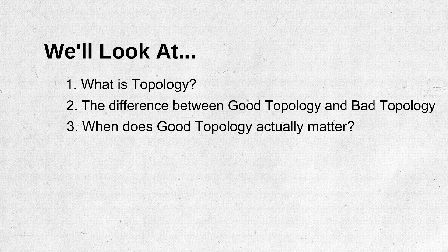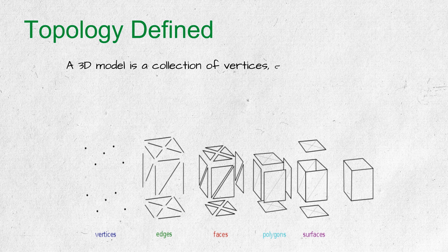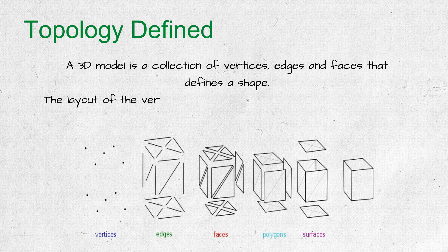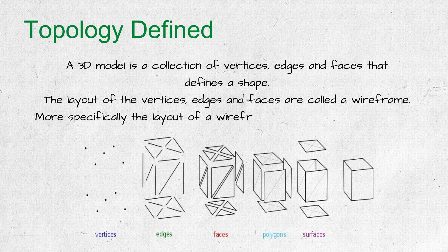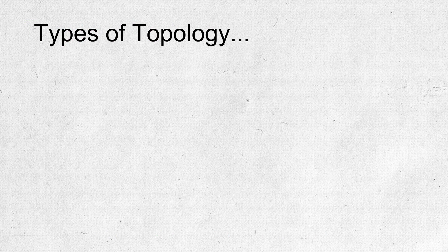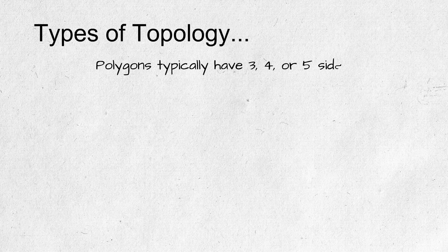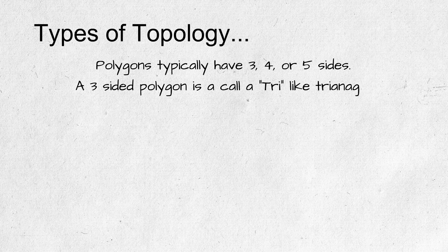First, let's define topology. A 3D model is a collection of vertices, edges, and faces that defines a shape. The layout of the vertices, edges, and faces is called a wireframe. More specifically, the layout of the wireframe is the topology. There are different types of topology — polygons typically have three, four, or five sides.